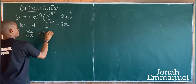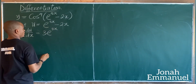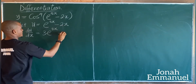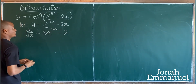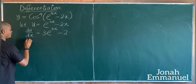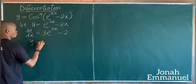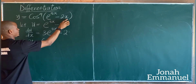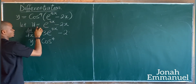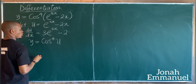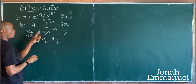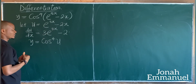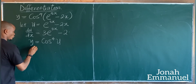Differentiating u with respect to x: du/dx equals 3 exponential 3x minus 2. Hence y is now equal to cos to the power 4 of u.